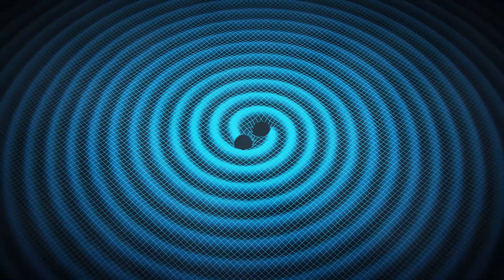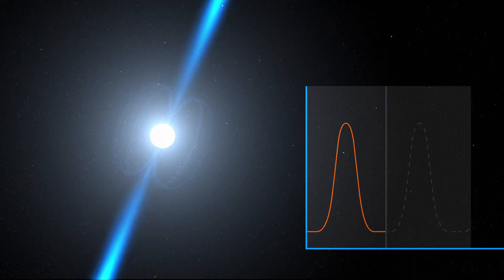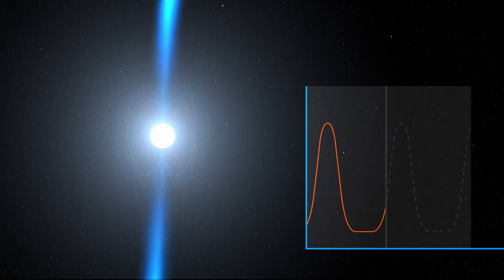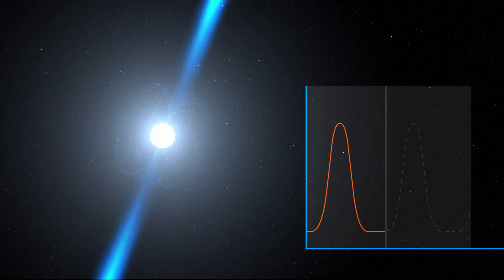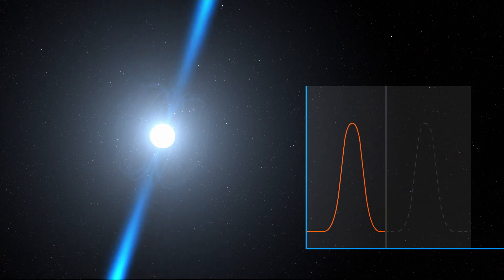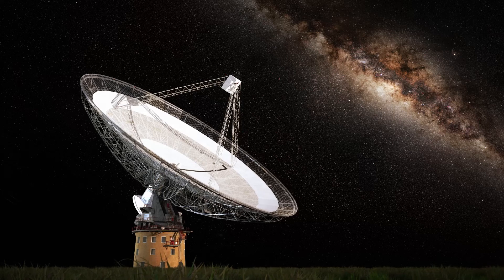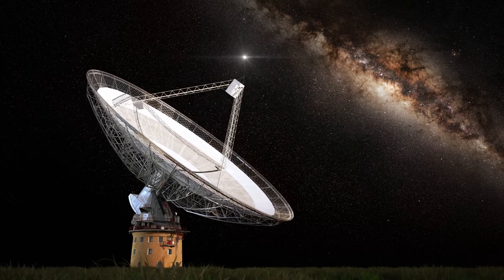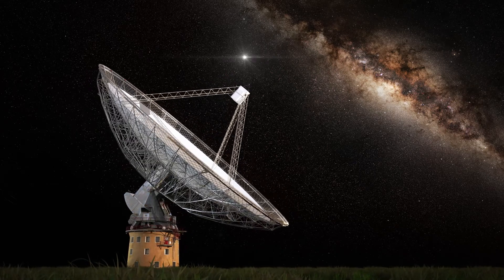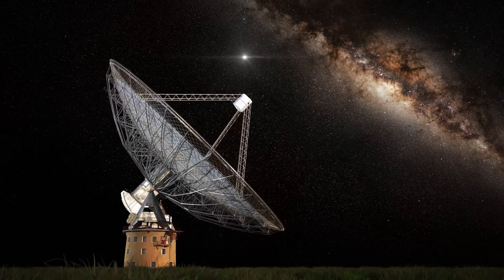My colleagues and I are searching for gravitational waves using the cores of collapsed stars, pulsars. Pulsars emit beams of radio waves that sweep by the Earth, appearing as regular ticks. We've used the CSIRO Parks Radio Telescope to monitor 20 pulsars in our galaxy over many years.